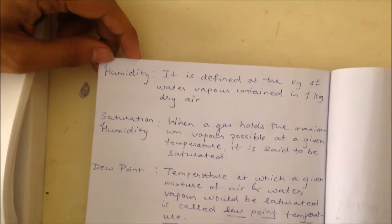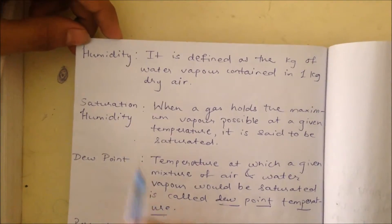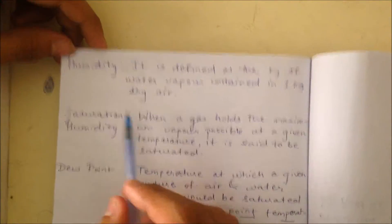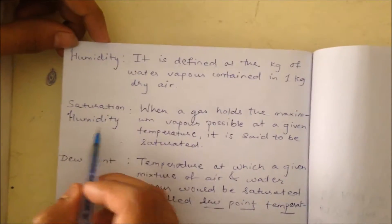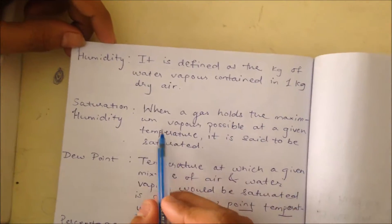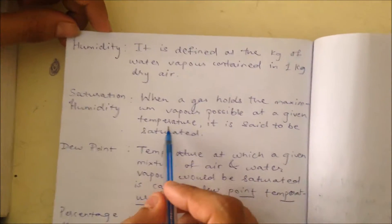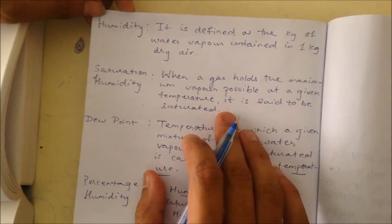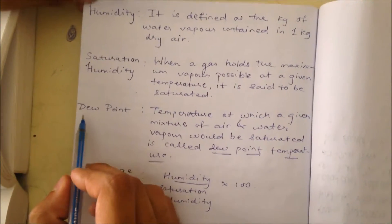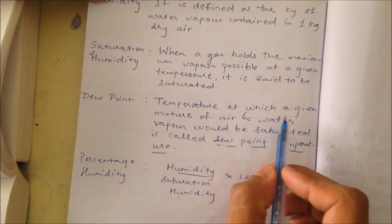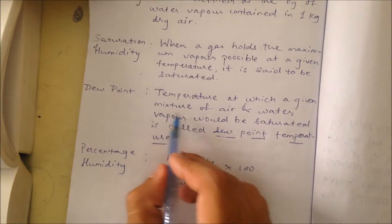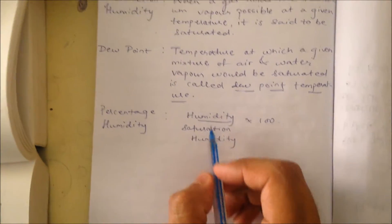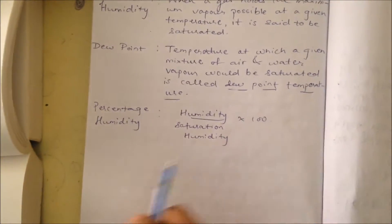Before going through the calculations, we will look at some basic definitions. Humidity is defined as the kg of water vapor contained in 1 kg of dry air. Saturation Humidity: when a gas holds the maximum vapor possible at a given temperature, it is said to be saturated, so the humidity at saturation is called saturation humidity. Dew point is the temperature at which a mixture of air and water vapor would be saturated. Percentage humidity is humidity upon saturation humidity times 100.